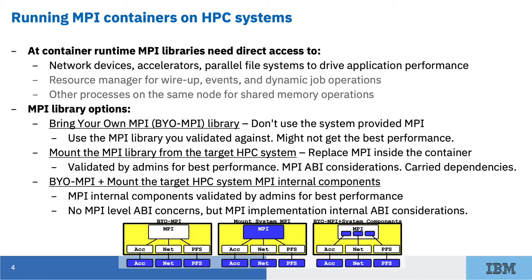Earlier talks discussed how devices can be mounted into the container by the container runtime. I'll focus on how to insert an MPI library that knows how to leverage these devices for MPI operations. I categorize this into three broad techniques. First, you could bring your own MPI and not use the one provided by the target system. The advantage is that you can use the MPI implementation you know and validate against, including non-standard or pre-standard features your application needs. The biggest disadvantage is that you might not get the best performance compared to the system-provided MPI.